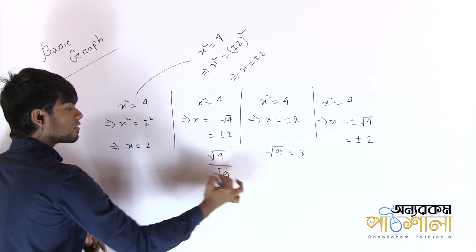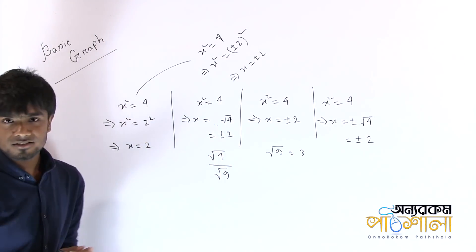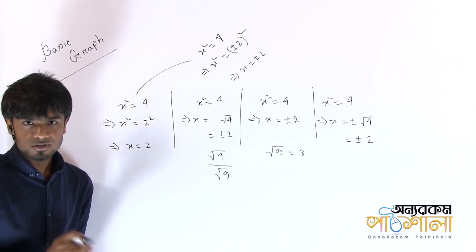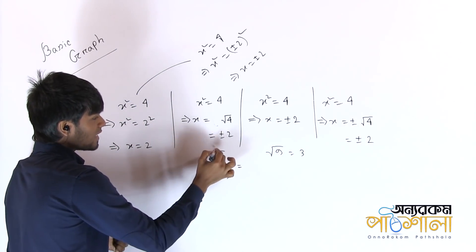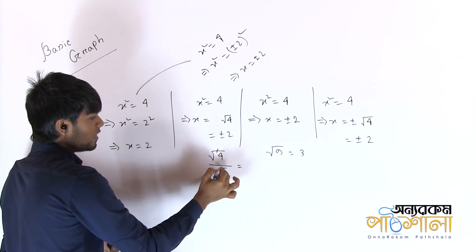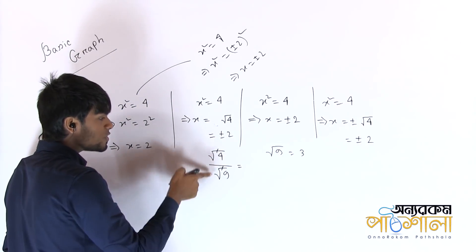Suppose we take the square root of 4 divided by 2, and the square root of 9. Square root, square root — what do you think? So 4 and 9.